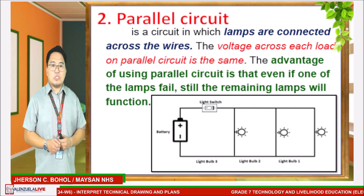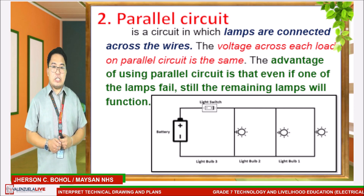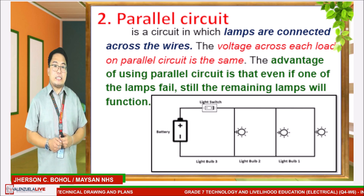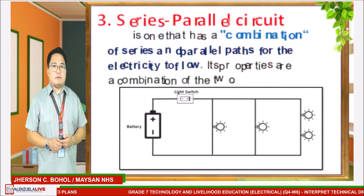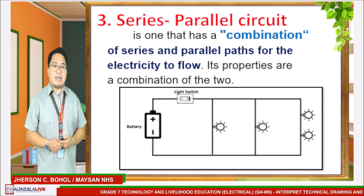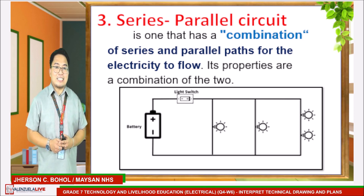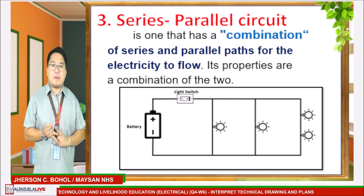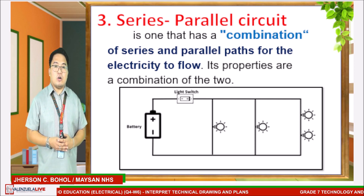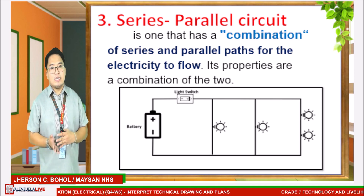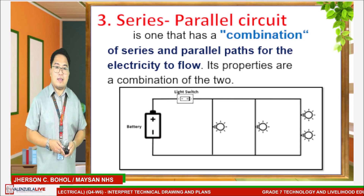The advantage of using a parallel circuit is that even if one of the lamps fails, the remaining lamps will still function. The third type is the series-parallel combination circuit. It is one that has a combination of series and parallel paths for the electricity to flow. Its properties are a combination of the two: series and parallel circuit.